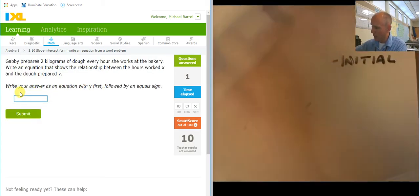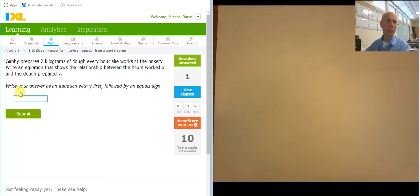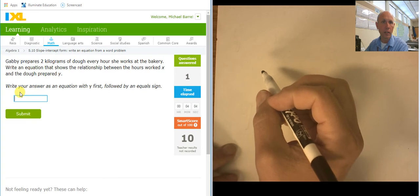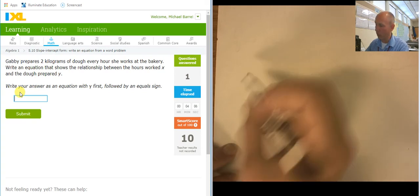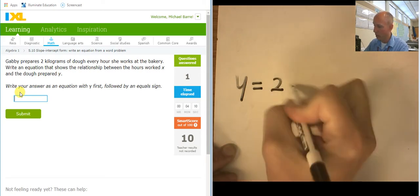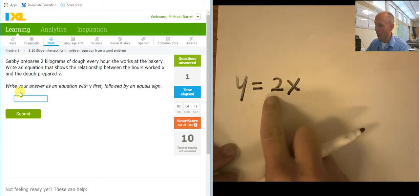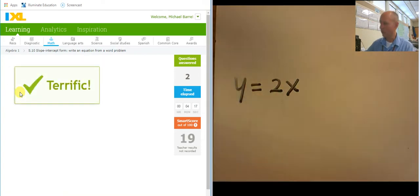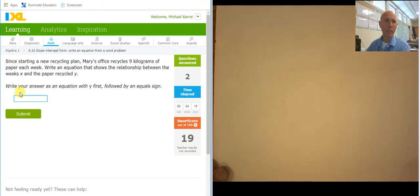Okay, I shouldn't erase the top. Gabby prepares two kilograms of dough every hour. She works at the bakery. Write an equation. Hours worked and dough prepared. So, y equals 2x. One hour, two kilograms. Two hours, four kilograms.